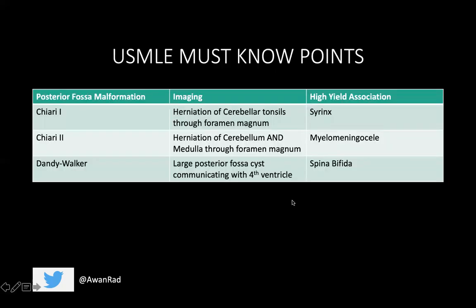The must-know USMLE points for posterior fossa malformations: For Chiari 1, look for herniation of cerebellar tonsils through the foramen magnum with a high association with a syrinx. For Chiari 2, look for herniation of both the cerebellum and the medulla through the foramen magnum, with a high yield association with myelomeningocele in the spine. For Dandy-Walker, look for a large posterior fossa cyst communicating with the fourth ventricle, with a high yield association with spina bifida.